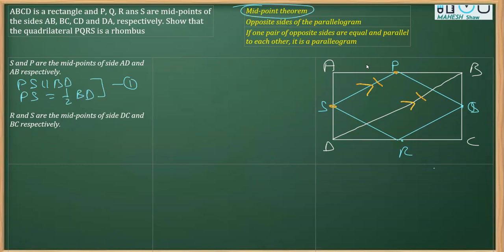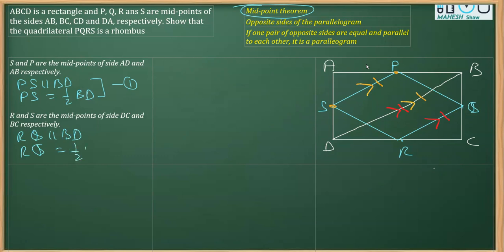Now we apply the midpoint theorem again, this time on triangle BCD. Here R is the midpoint of DC and Q is the midpoint of BC. Therefore, RQ is parallel to BD and the length of RQ is equal to half of BD.